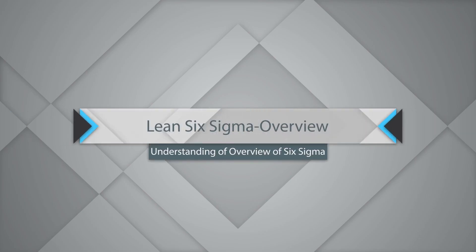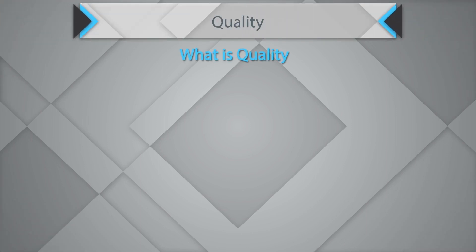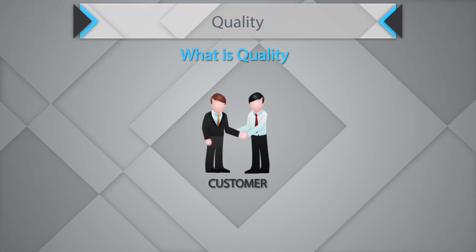Hello, welcome to this video on Six Sigma overview. What is quality? The entire definition of quality revolves around the customer. Quality essentially is all about meeting the customer's requirements. So when you are in pursuit to create quality products or services, it is extremely important to understand what the customer wants and design processes accordingly.